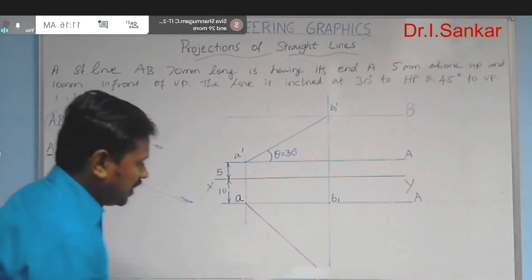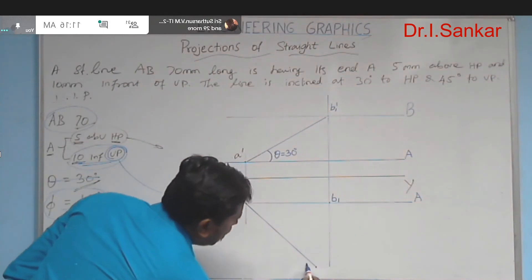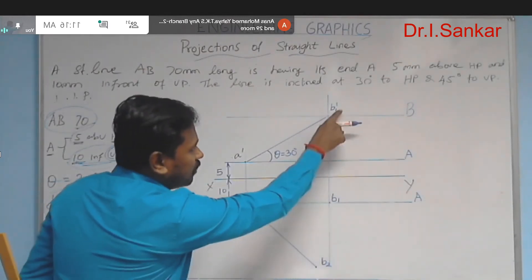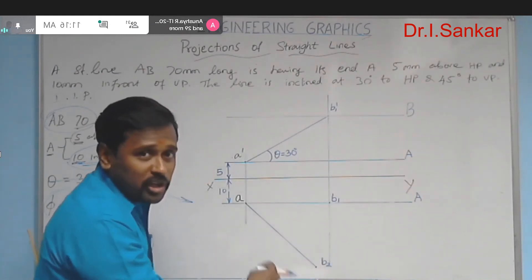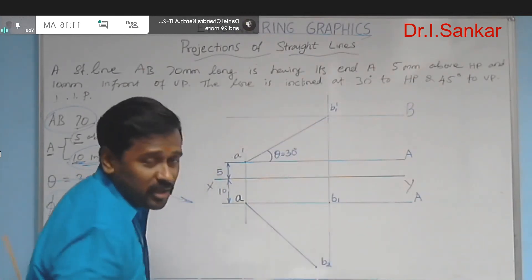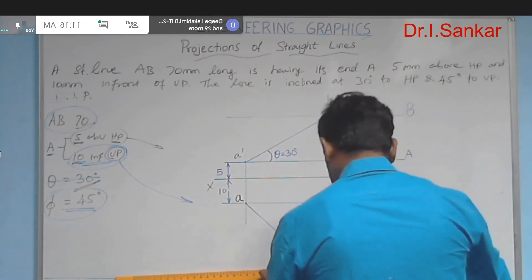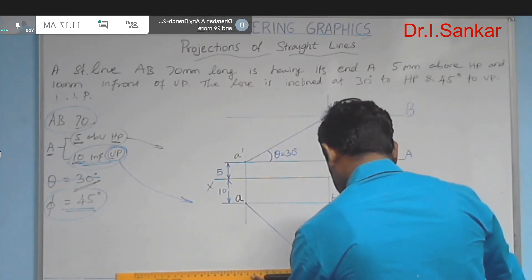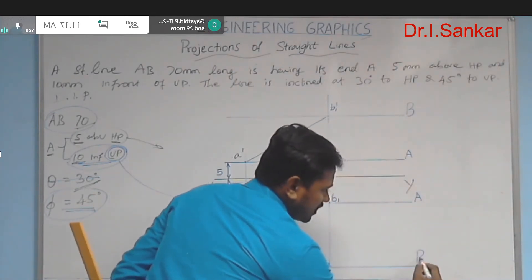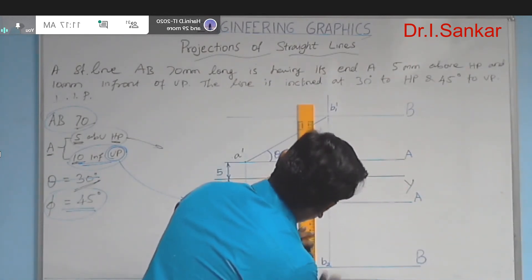Draw the line with 45 degree inclination to XY. The end of this line is nothing but b2 — not b1, which was already obtained. This introduces a new terminal in the top view area: b2. Immediately after that, draw the projector and the locus for point b in the top view area.